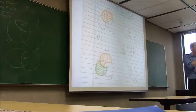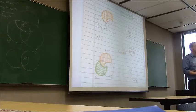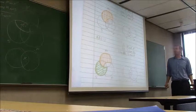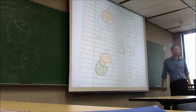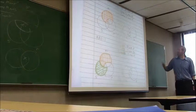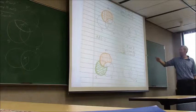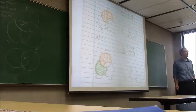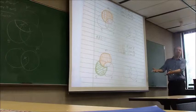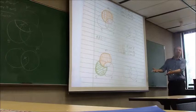Rule three — to do with negativity — if a premise is negative, the conclusion must be negative. There's no negativity in AAI-1, so it passes. But wait — we have a problem. The rules say the argument is valid, but the diagram says it's invalid. What's going on?